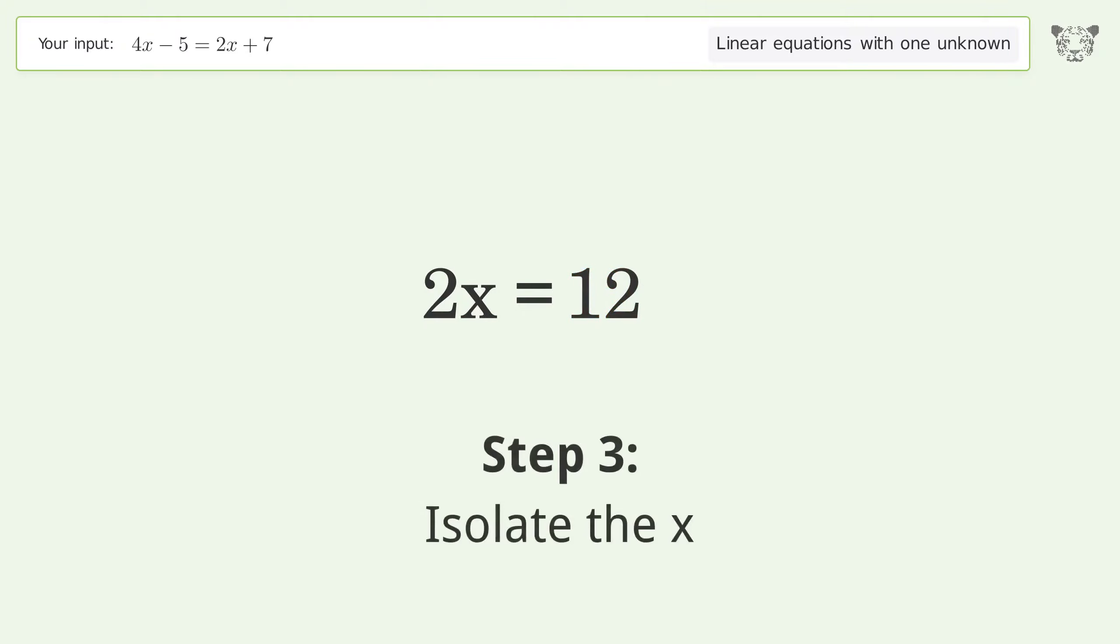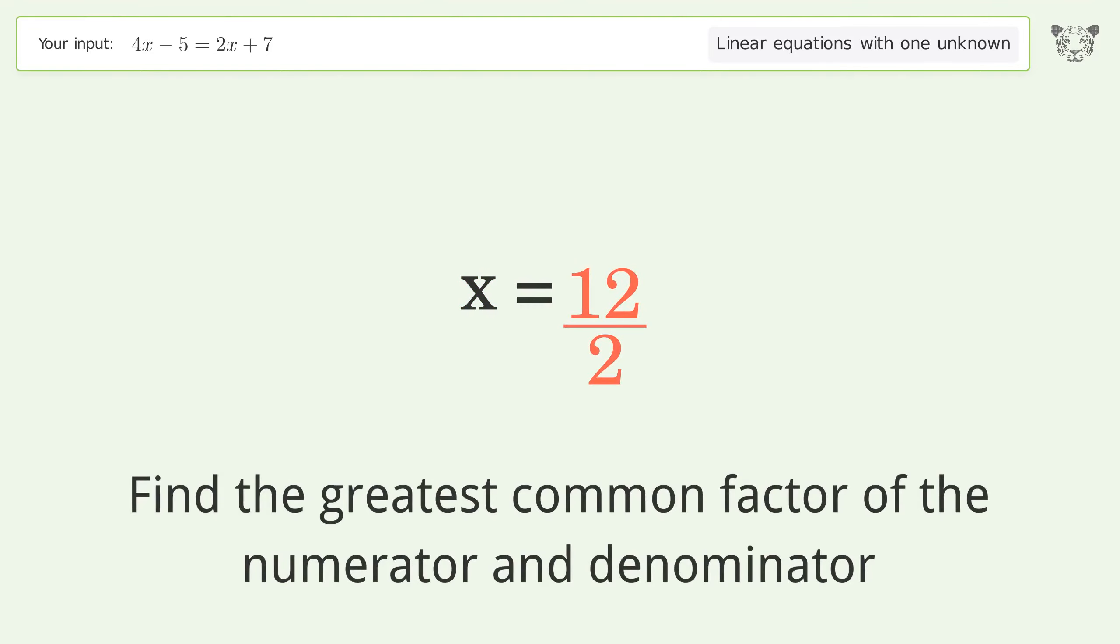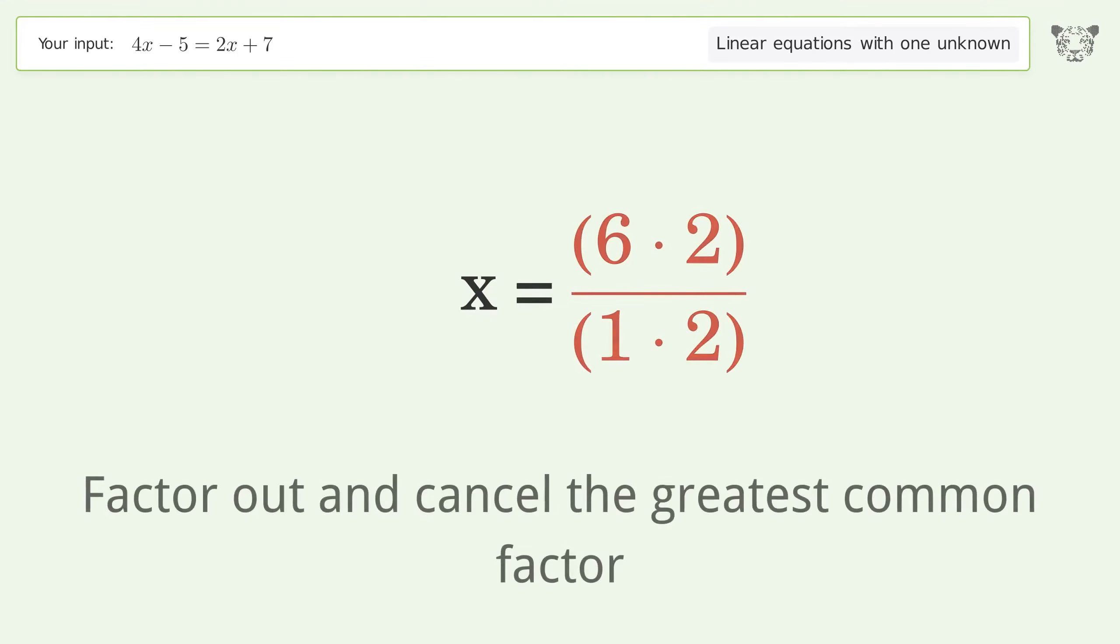Isolate the x. Divide both sides by 2. Simplify the fraction. Find the greatest common factor of the numerator and denominator. Factor out and cancel the greatest common factor.